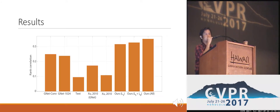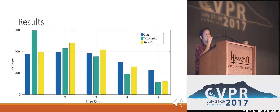Quantitative evaluation on the MS COCO and Visual Genome datasets shows that our method can significantly outperform the baseline and reference methods for the task of spatial semantic image search. In addition, we also conduct a user study showing that the search results produced by our method better match user intention compared to the baseline and previous works.